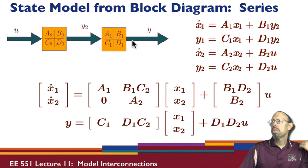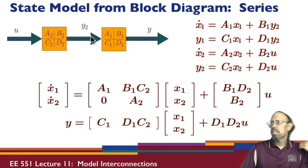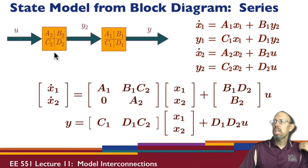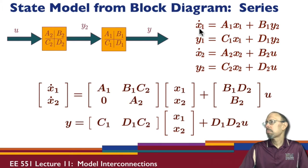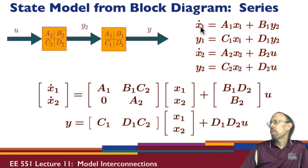What happens when we have two systems in series? The input u comes into the first system, the output of that system goes into the next system, and then we get the overall output. What does the overall state model look like when we combine these two systems?